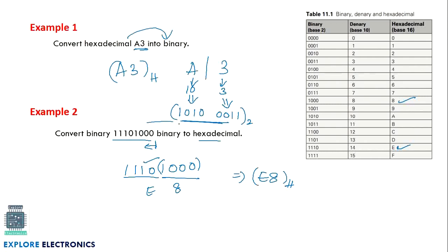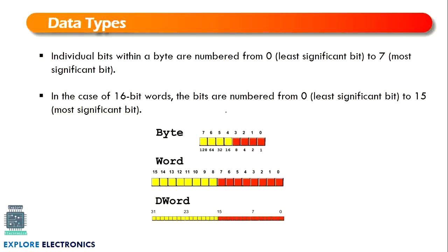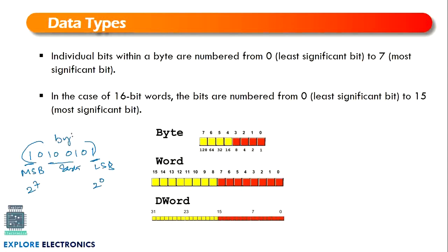Next, data types — how data will be represented. The individual bits within a byte are numbered 0 to 7. The rightmost bit is the least significant bit (LSB) with a weight of 2^0, and the leftmost is the most significant bit (MSB) with a weight of 2^7. A byte has 8 bits. To convert a byte to decimal, multiply each bit by its corresponding power of 2 — from 2^0 up to 2^7.